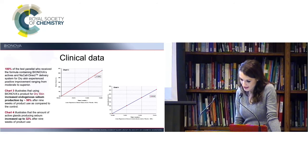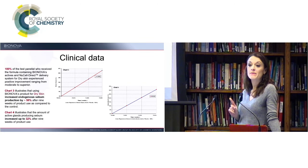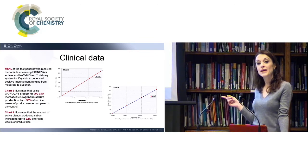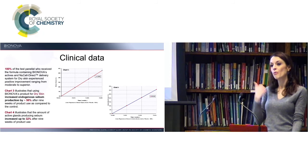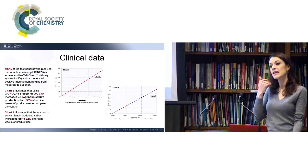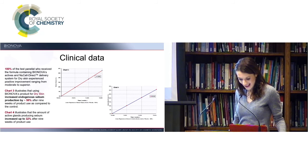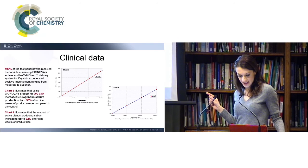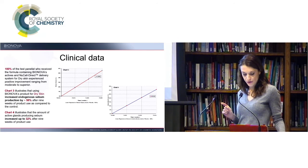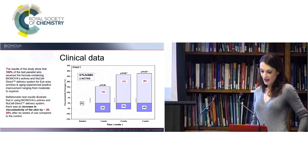For dry skin, same thing. After nine weeks, 50% of the patient had increased indigenous sebum production. For dry skin patients, what OptiPath and new cell does, it increases the production of oil instead of moisturizing with topicals. We're targeting the source of the condition and increasing sebum activity. And illustrates that the amount of active glands producing sebum increased up to 32% after nine weeks of product use.